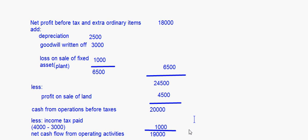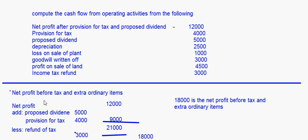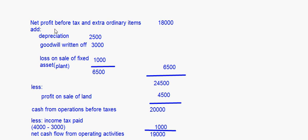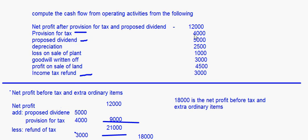This is how you calculate the net cash flow from operating activities. Remember: when calculating net profit before tax and extraordinary items, income tax refund is subtracted there. After making adjustments for non-cash expenses, the income tax paid — which is provision for tax minus income tax refund — is deducted at the end.